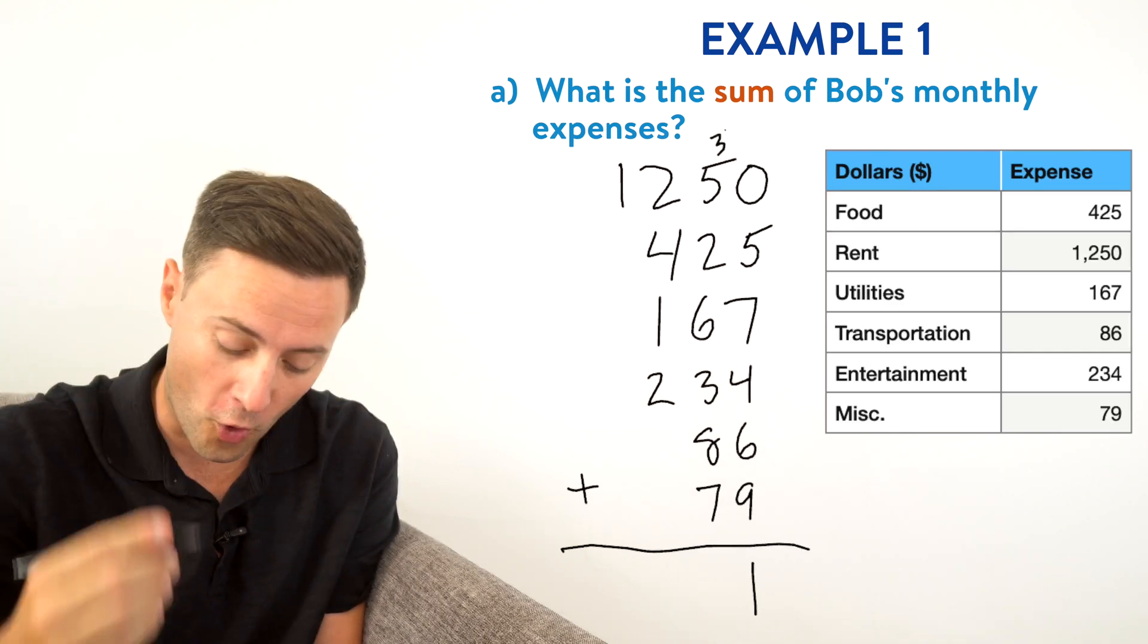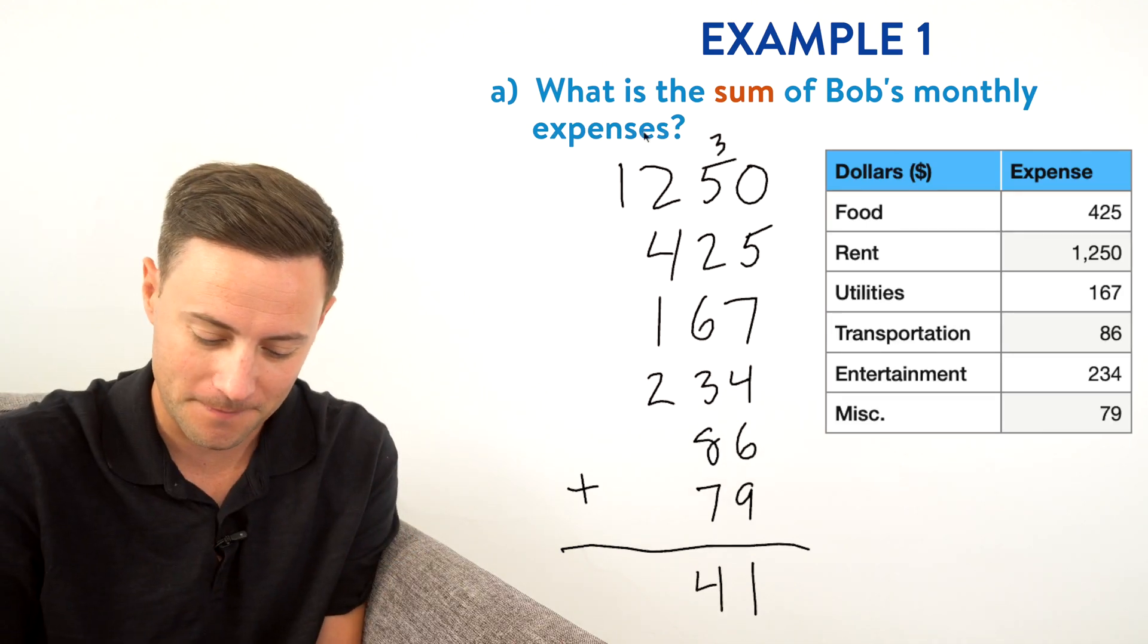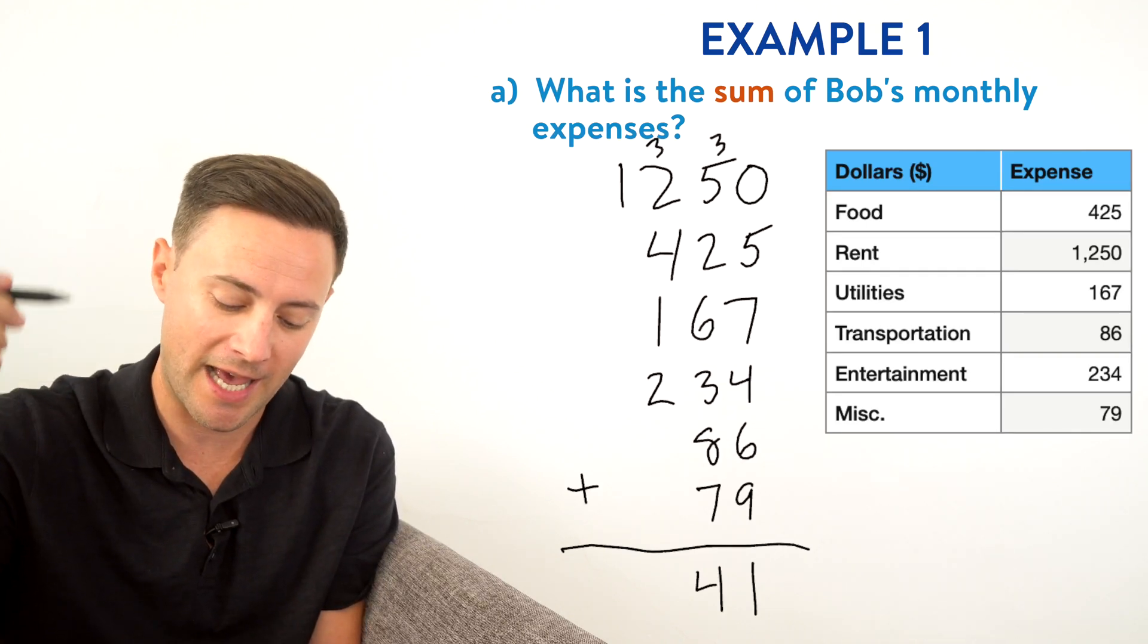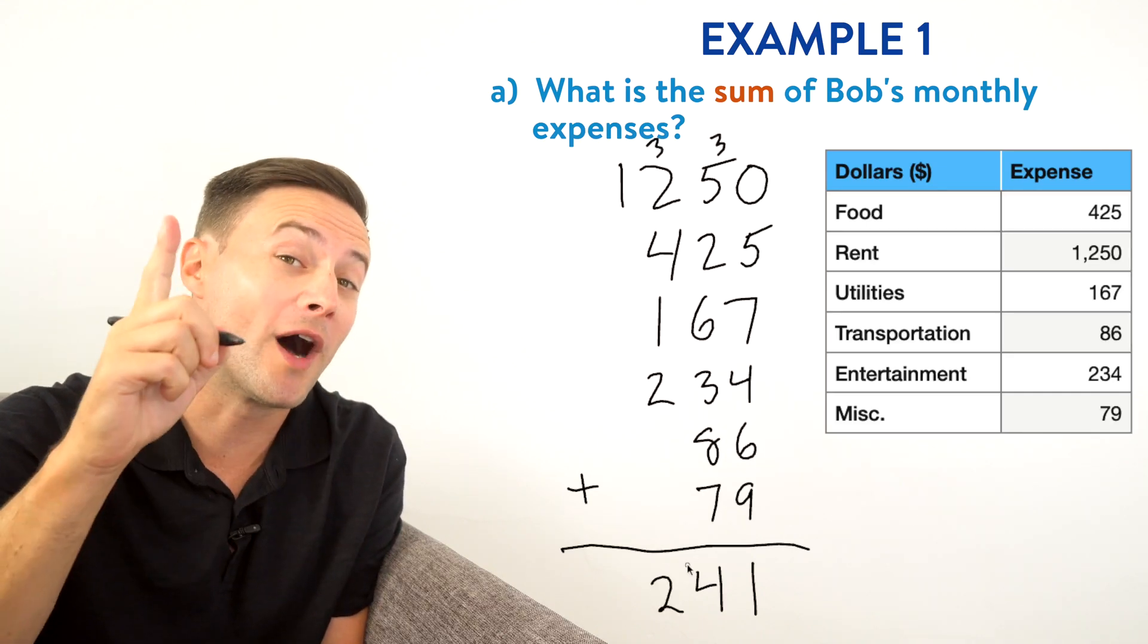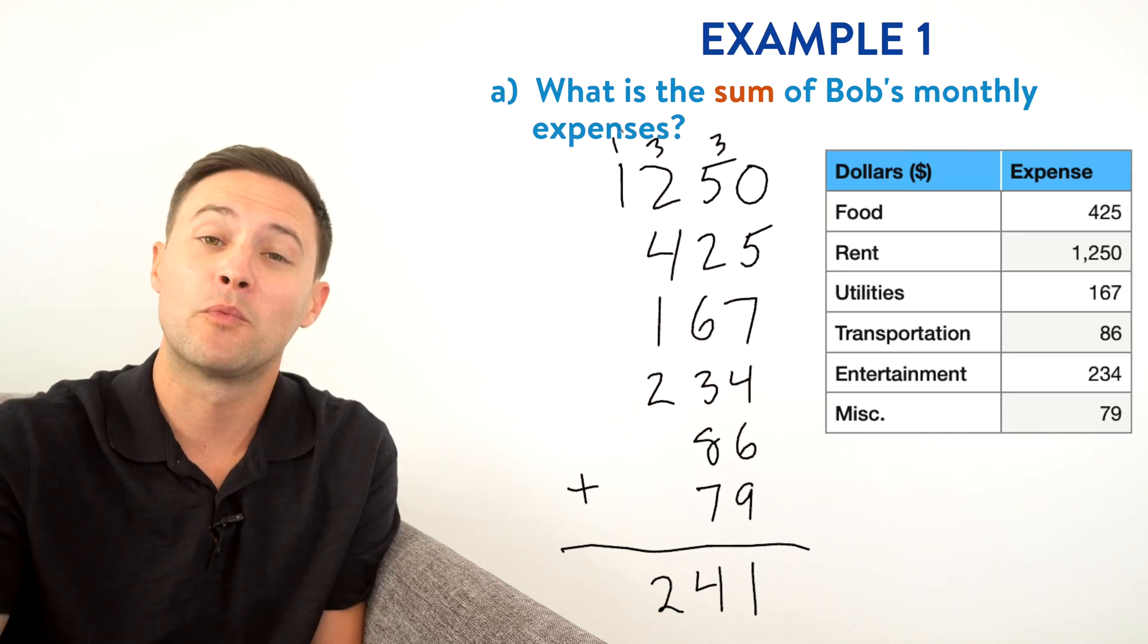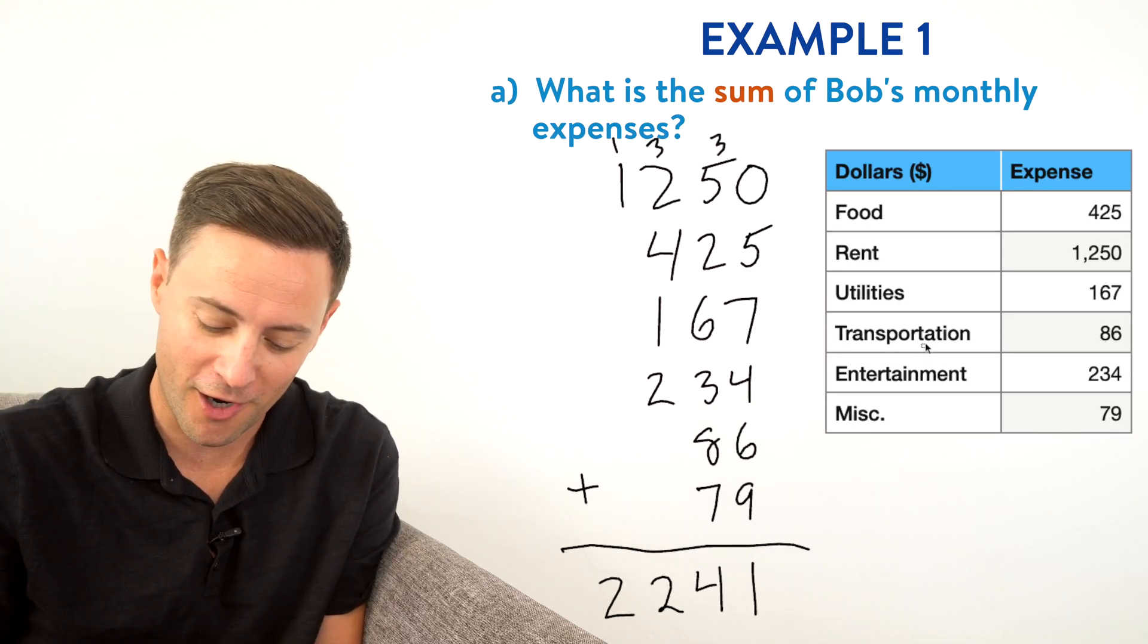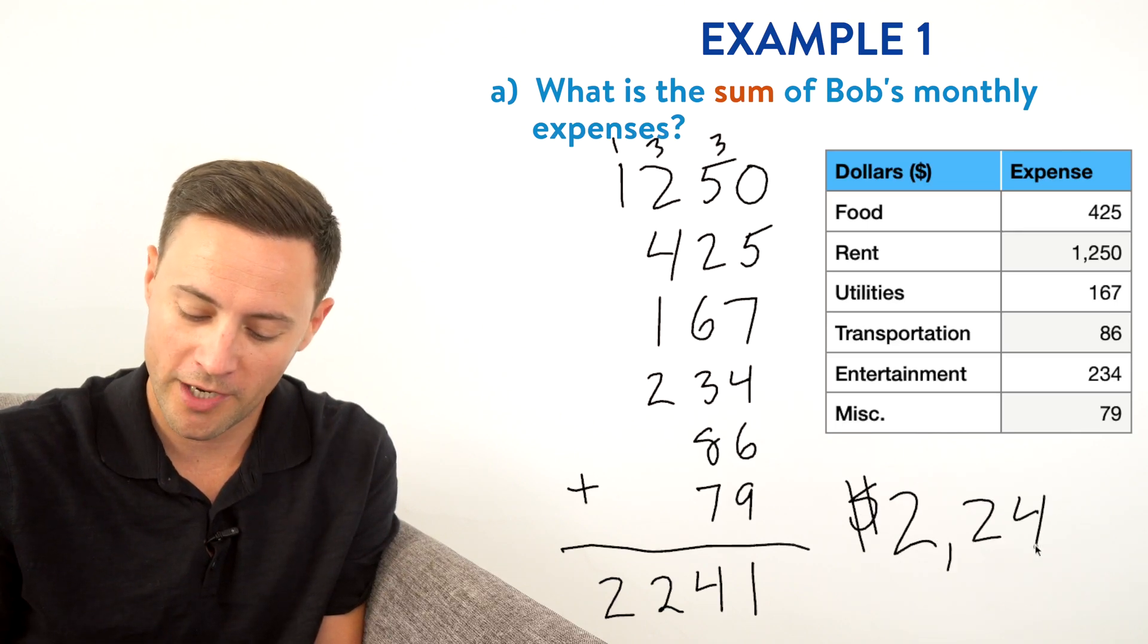Same thing three plus two is five plus four nine, 10, 11, 12. Write down the two, carry the one. It was 12 remember. So we're carrying a one this time and one plus one gives us two, which means Bob's monthly expenses are $2,241.